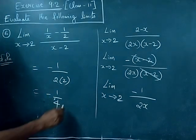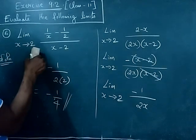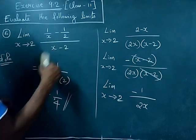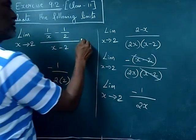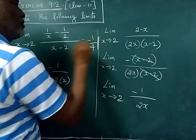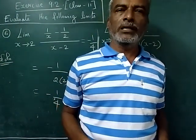This is the answer. So therefore, the final answer will be limit x tends to 2, 1 by x minus 1 by 2 divided by x minus 2. The answer is minus 1 by 4. Hope you have understood this problem. Thanks for watching.